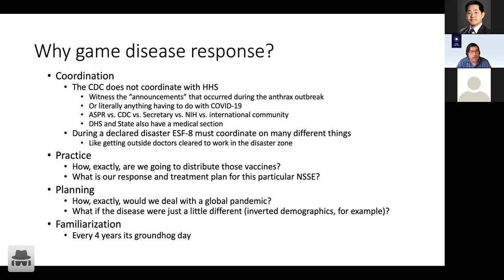Another reason is practice. In vaccine or prophylaxis distribution — where you're distributing something to prevent people from coming down with symptoms, which is common in bioterrorism events — you might have 80,000 people exposed to anthrax who need ciprofloxacin in their hands within two weeks. How are you going to distribute all that to the population? It's hard to do in the real world, but you can test a lot of different concepts and varieties in games.